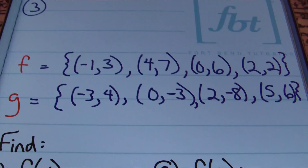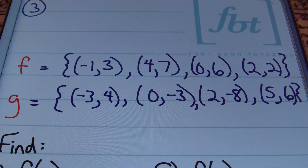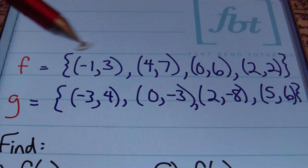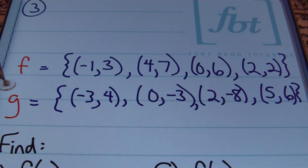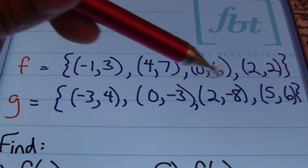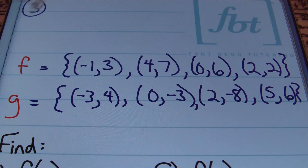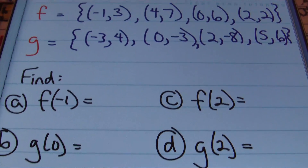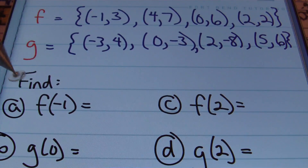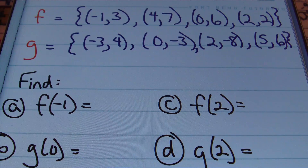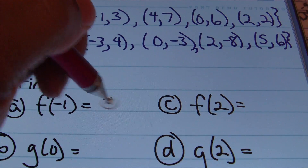In problem number 3, we're given two relations. I'm given a set of ordered pairs called f — this is a function because the x values do not repeat. I also have a function g where the x values don't repeat either, so both f and g are functions. In part A, they want me to find f of negative 1. I look in function f for the y value when x equals negative 1 — and that point has a y value of 3. So the answer is 3.